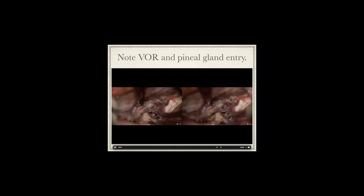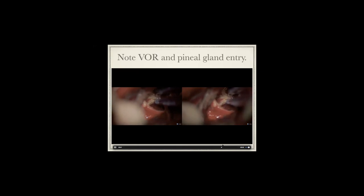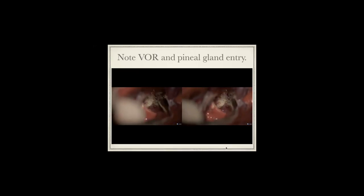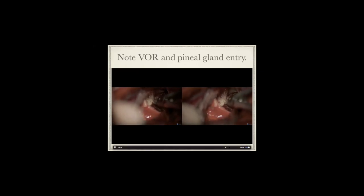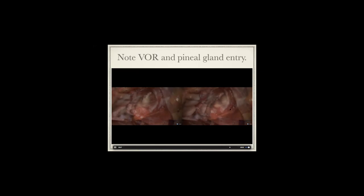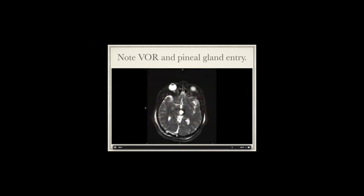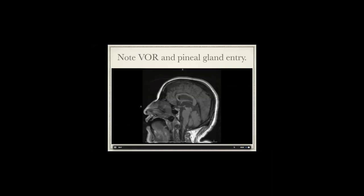Transpineal gland entry from the interhemispheric approach gives a perfect angle into the cavity of the cavernoma for resection. Resecting the cavernoma is a standard technique - you can do it piecemeal if necessary, though I generally avoid it unless very large. At the end, look how nice the brain is - cavernoma completely out. Here is the post-op hemosiderin ring confirming complete removal. Look how steep the tentorium is - you can see why I chose the posterior interhemispheric approach.